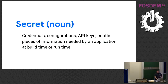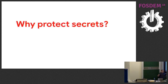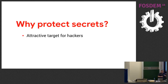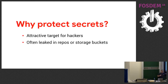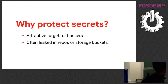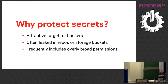We have to ask ourselves a really obvious question: why should we protect secrets? Why not just use a config map for everything? Well, secrets are a really attractive target for attackers. They're often leaked in public repositories or open buckets on S3 or Google Cloud Storage, and they often include overly broad permissions given to people who shouldn't have them. The CEO of a company should not have sudo access to all machines, yet that's what happens. These users tend to leak credentials everywhere, so we need a really strong strategy for protecting secrets.